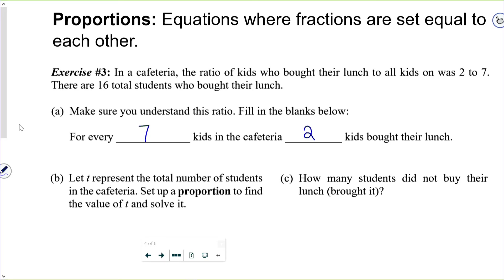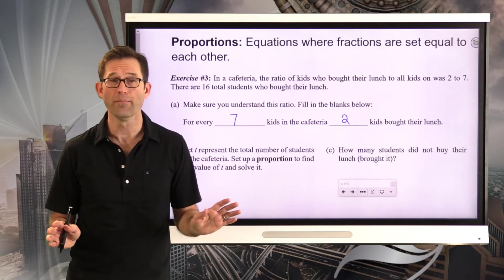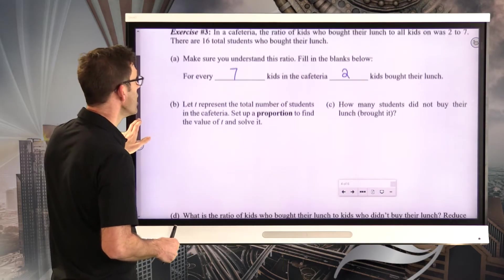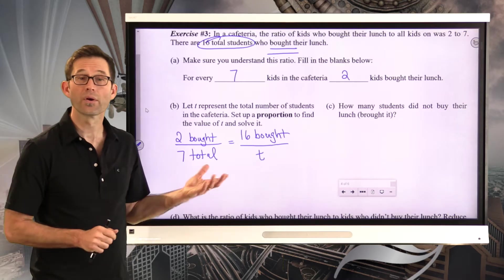Make sure you don't have it the other way around. If we had put the 2 in the first blank and the 7 in the second blank, we'd be saying for every 2 kids, 7 of them bought their lunch. And I'm just going to go out on a limb. I don't think that's possible. Let's take a look at letter B. Let T represent the total number of students in the cafeteria. Set up a proportion to find the value of T and solve for it.